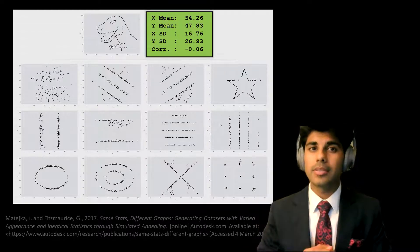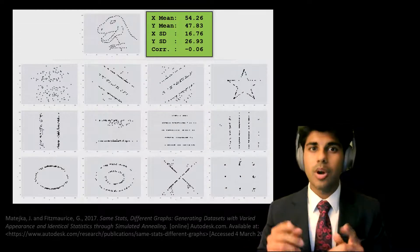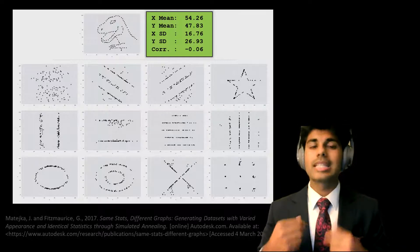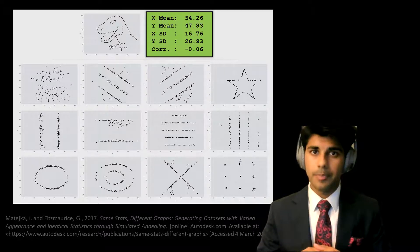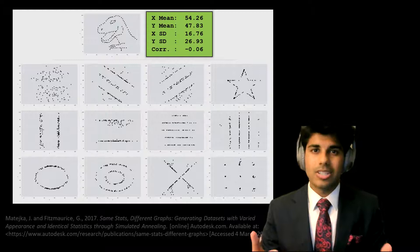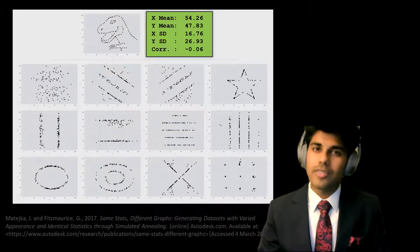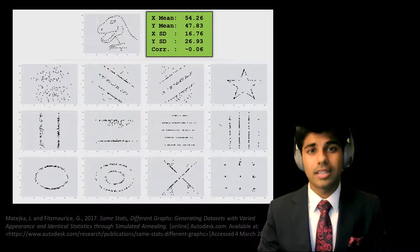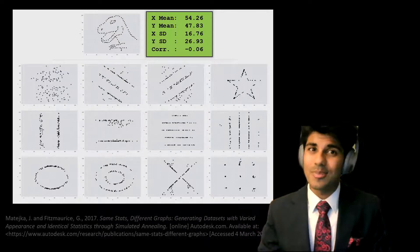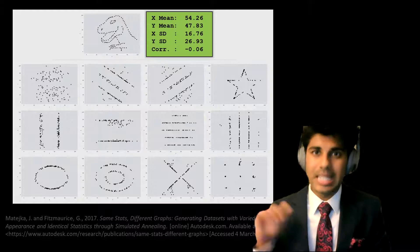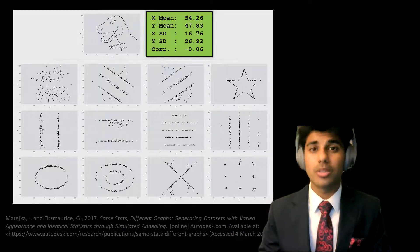Turn your attention to the screen and look at the green box with the numbers. You don't have to know what those numbers mean, but those are statistics that came from some data. Those statistics don't look too interesting, but what if I told you those stats came from the data on the left side — the data that looks like a dinosaur?